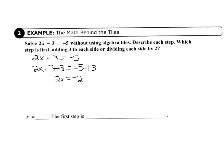And then we divide each side by 2. So we have 2x divided by 2 equals negative 2 divided by 2. 2x divided by 2 equals 1, so that equals x. And negative 2 divided by 2 equals negative 1. So x equals negative 1.